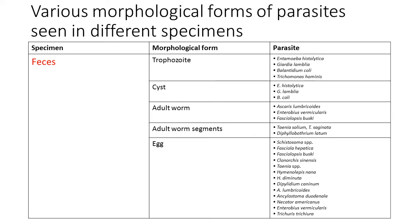Various morphological forms of the parasites are seen in different specimens. Normally in laboratories we receive a stool sample most commonly in the parasitological department. When we receive the stool sample, we can see morphological forms such as trophozoite, cysts, adult worms, segments, and eggs. When we consider the trophozoite, we can see Entamoeba histolytica, Giardia lamblia, Balantidium coli, and Trichomonas hominis.